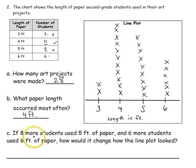The last question says, if 8 more students used 5 feet of paper, and 6 more students used 6 feet of paper, how would it change how the line plot looked?